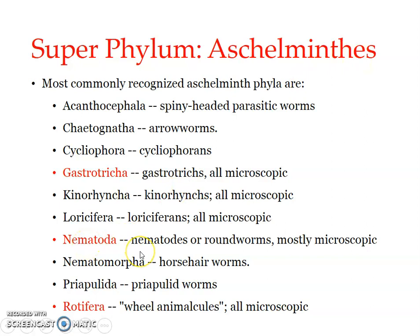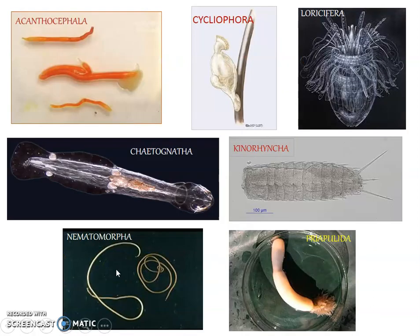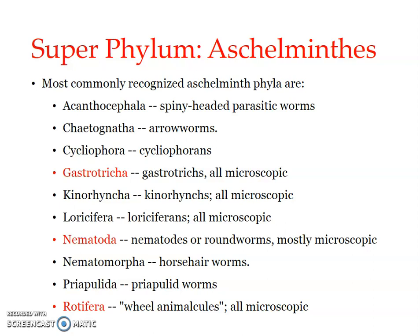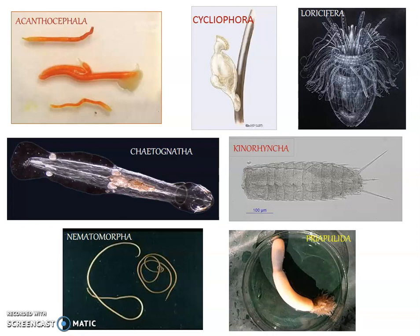Nematodes we will be learning with examples and the type species — we will cover features as well as most organ systems in detail. Then we have Nematomorpha, known as horsehair worms — parasites of insects, almost vermiform in nature. And we have the Priapulida — priapulid worms — which have the characteristic of protruding out their internal parts.